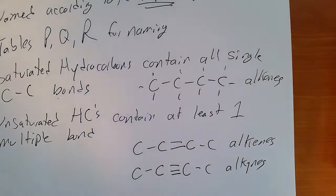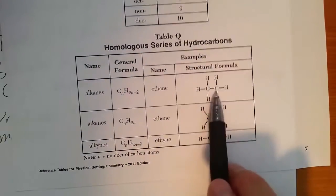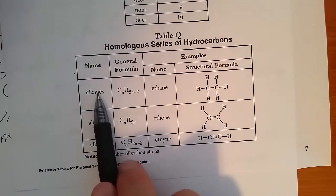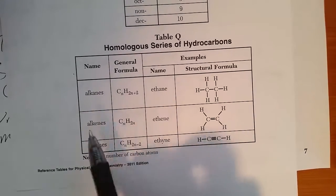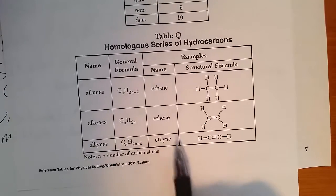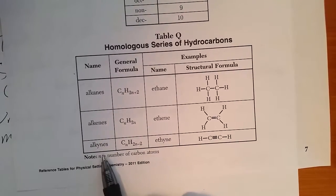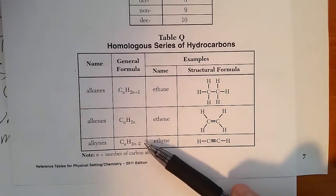And you don't even have to remember that because it's right here on table Q. Single bonds only, alkanes. The name ends in -ane. Double bond, alkenes, the name ends in -ene. Triple bond, alkynes, the name ends in -yne. The general formula for these hydrocarbons.